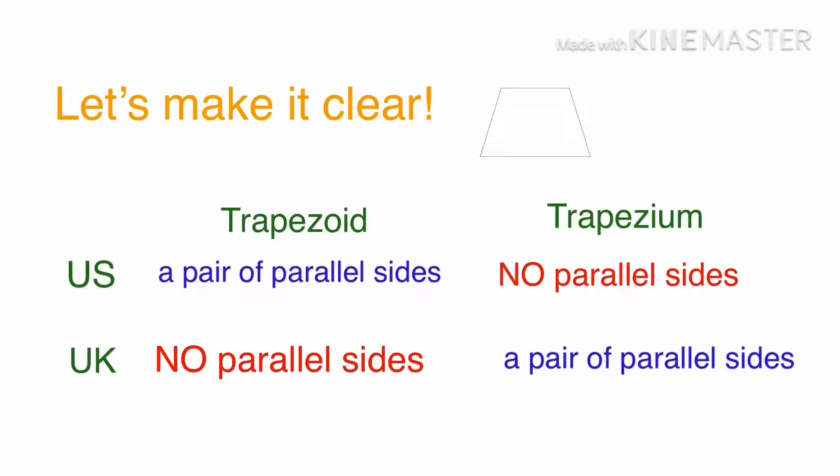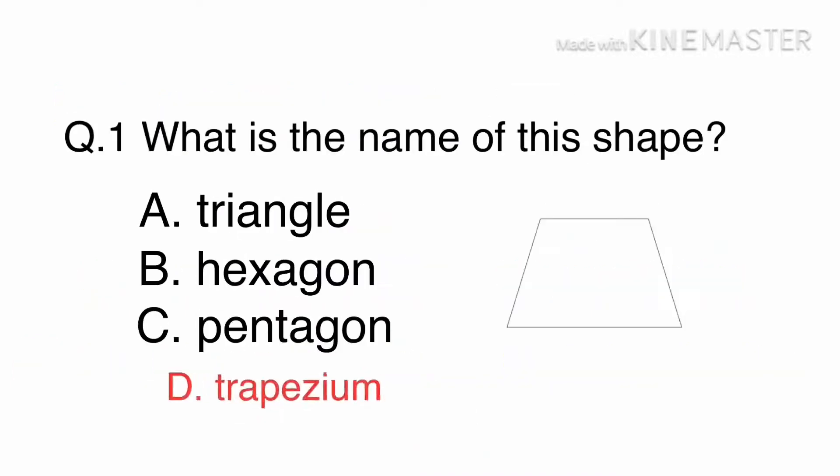Let's make it clear. Australia uses the same way as the United Kingdom. In the UK and Australia, a trapezium must have a pair of parallel sides. If it doesn't, it's a trapezoid. The answer is D, trapezium.